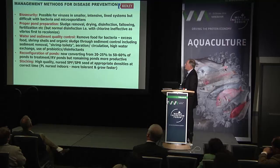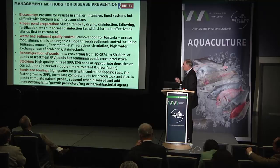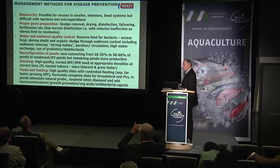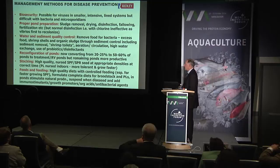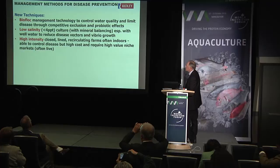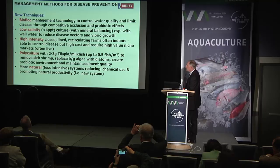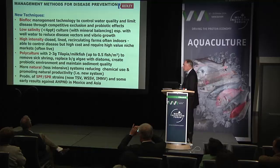For management methods for disease prevention: biosecurity is very difficult with bacteria or microsporidians. There's pond preparation, sediment and water quality control — really important. Reconfiguration of ponds is also key: before, virtually all ponds were used for production, but now up to 60% are being converted into reservoirs, recirculation, and bioremediation — quite effective. Using high-quality, nursed SPF and SPR seed, and high-quality diets with controlled feeding are all very important. New techniques include biofloc management technology, low salinity culture, high-intensity lined recirculating farms, polyculture with tilapia, and using more natural less intensive systems gaining favour in places like Thailand.